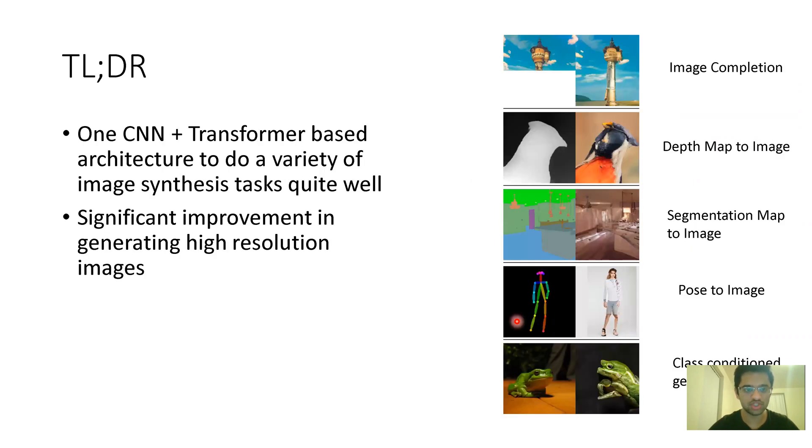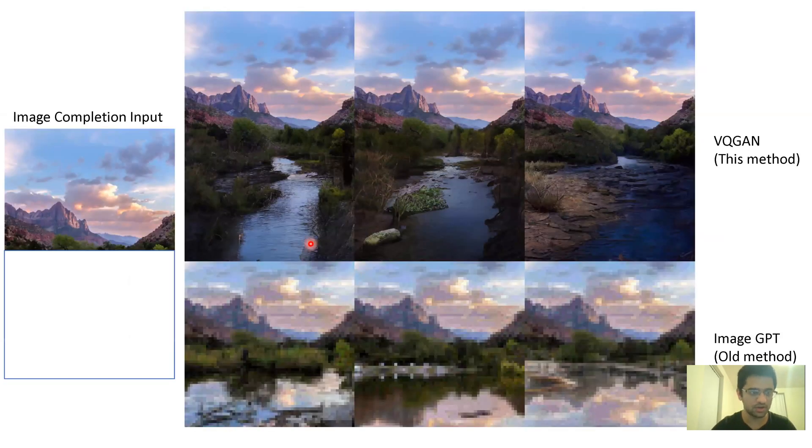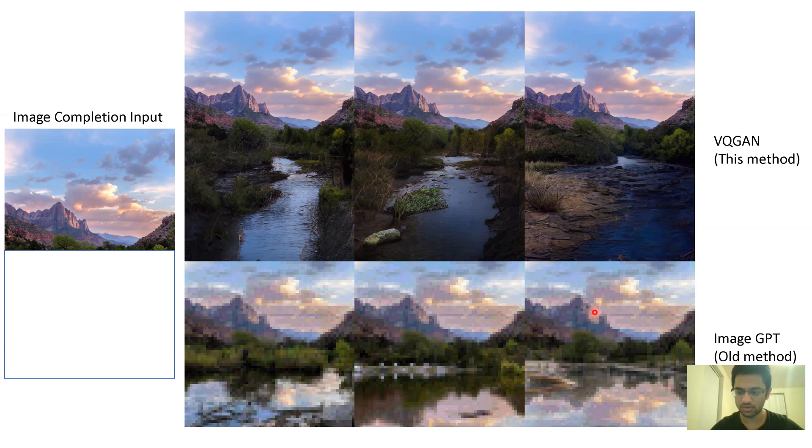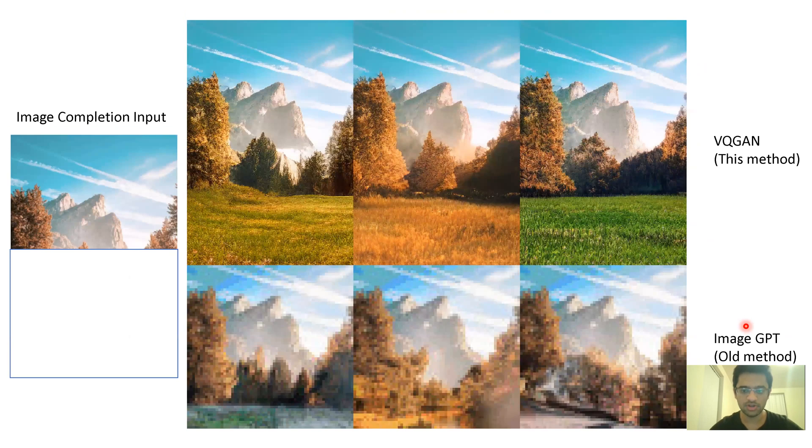The TLDR version is that they propose one architecture which leverages the strengths of both CNNs and transformers to do a variety of image synthesis tasks quite well. For example, the same architecture can go from depth to RGB, semantic map to RGB, pose to RGB, et cetera. They also show a significant improvement in generating high-resolution images using transformers, which has not been done before. You can see here that the input is for the task of image completion, and their method significantly performs better than the previous method of image GPT.